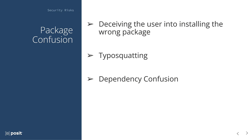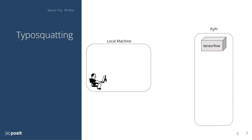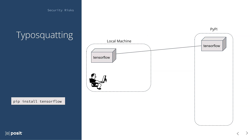I'm going to start with examples in terms of Python packages, as due to the more permissive nature of PyPI, these have shown up in high-profile real-world exploits in the past year — though the same cases can apply to R package repositories as well. So first, let's learn about typosquatting. Let's say we're a data scientist sitting at our local machine and we want to start a machine learning project. We want to grab the TensorFlow package from PyPI, so we use the standard Python installation utility pip and say pip install tensorflow — equivalent to doing install.packages in R to install a package from CRAN.